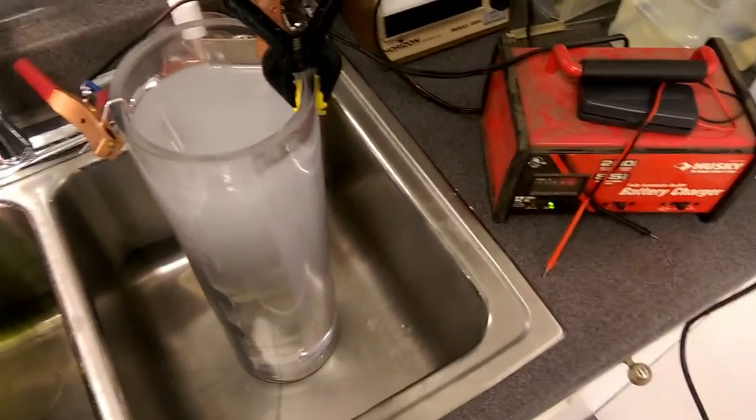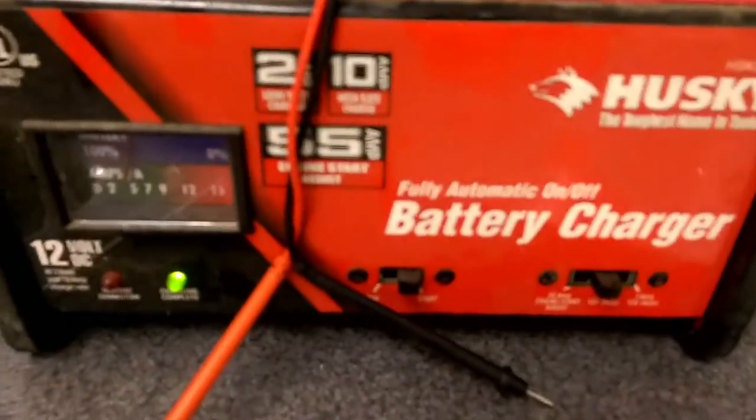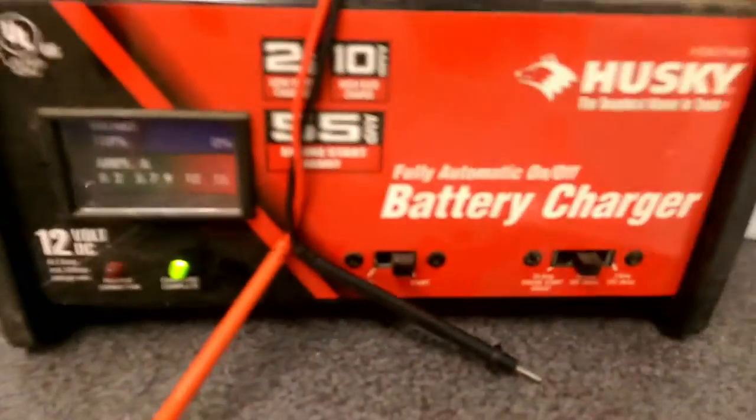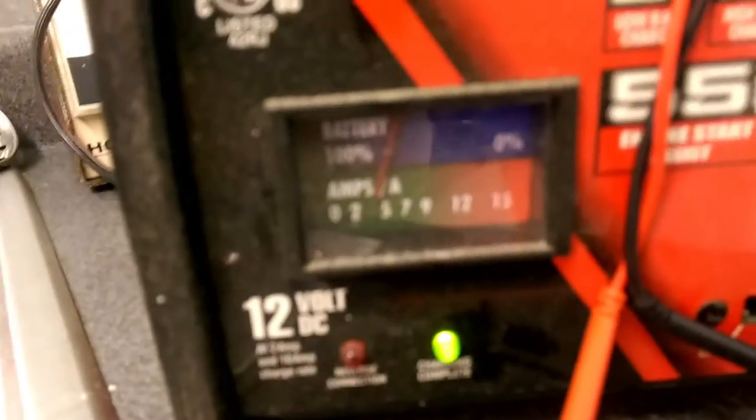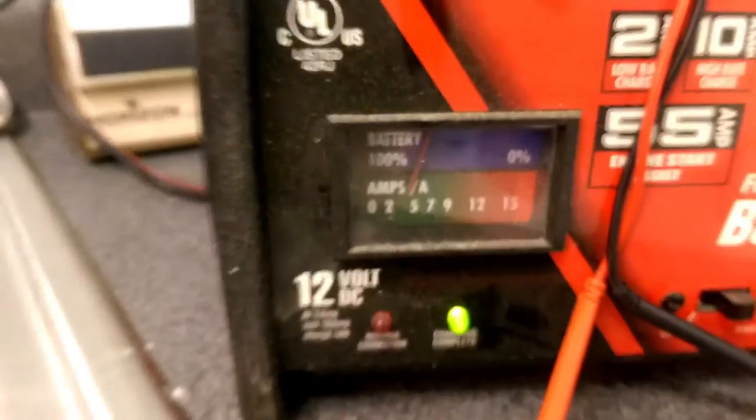Here we are with an aluminum anodizing setup. You got a battery charger running at 12 volts. We're putting about 10 amps through it, but it's only drawing maybe four to five max. We got our piece inside the tank here, and you can see the white coloring is actually bubbles bubbling up through the surface.